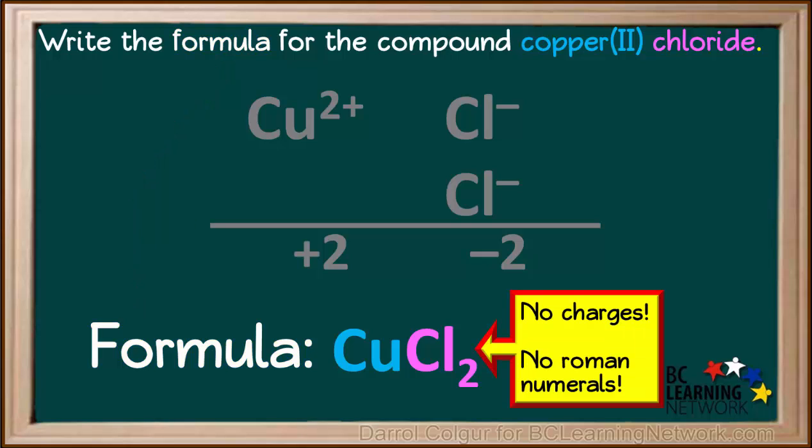Notice that the final formula has no charges and no roman numerals in it. In simple ionic compounds, roman numerals are used only in the names, not in the formulas.